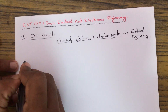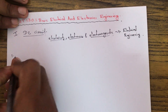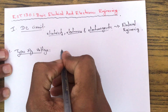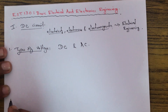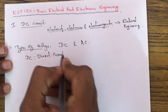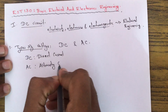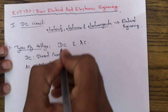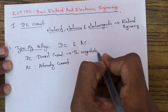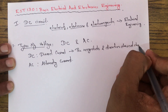Let us see some basic quantities and their definitions and units. Starting with types of voltage — there are two types: DC voltage and AC voltage. DC means direct current and AC means alternating current. In DC, the magnitude and direction do not change with time.